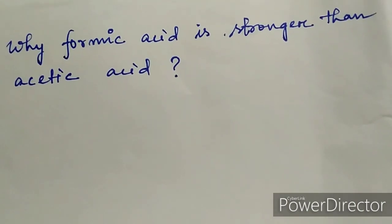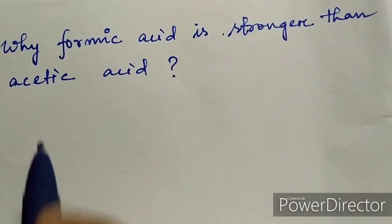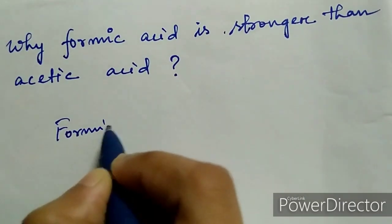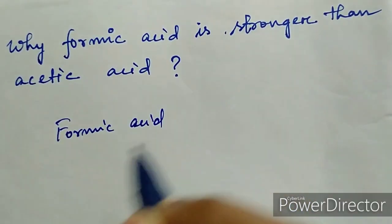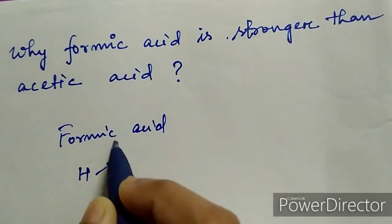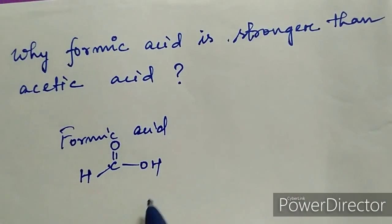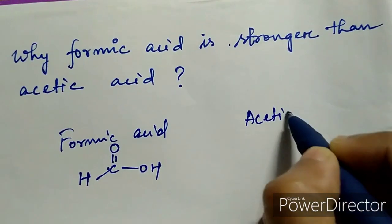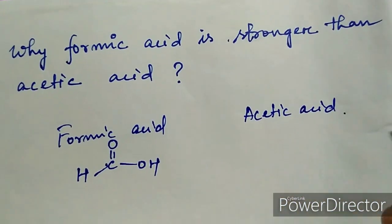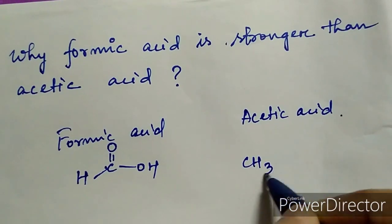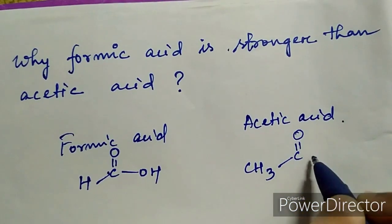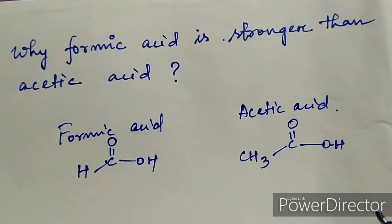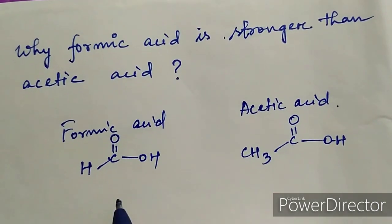The formula of formic acid is H-C double bond O-OH. And the formula of acetic acid is CH3-C double bond O-OH. Now, formic acid is stronger and acetic acid is the weaker acid.